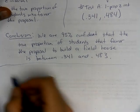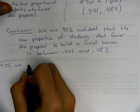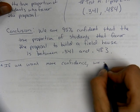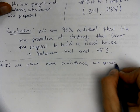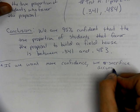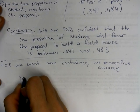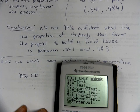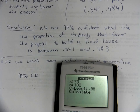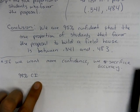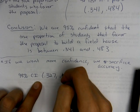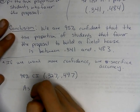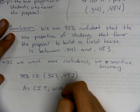This is what you'll be doing most of second semester: conditions, testing, conclusion. Now, if you want more confidence, you sacrifice accuracy — you get a wider interval. If I switch to a 98% confidence interval, the interval becomes 0.327 to 0.497, which is larger. So as confidence level increases, you get a wider interval.